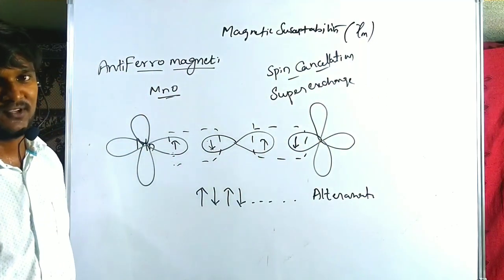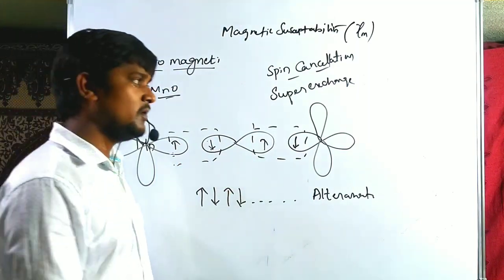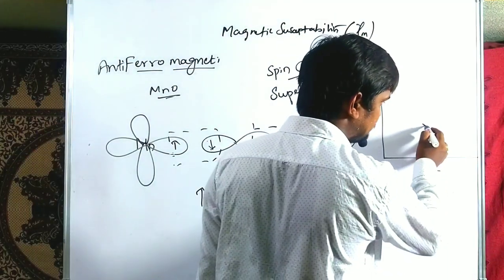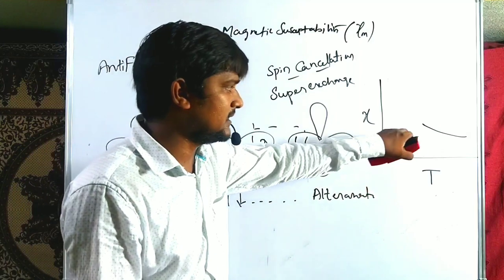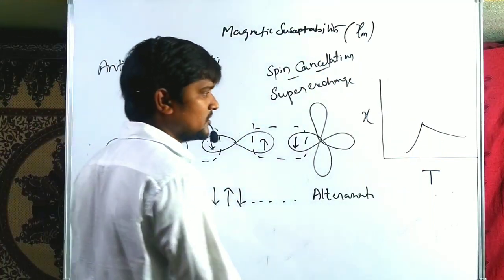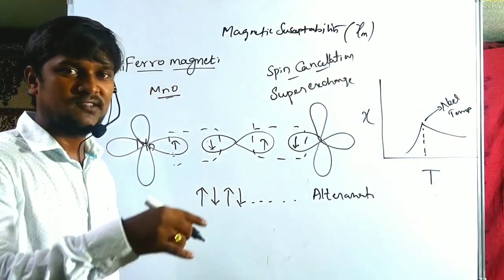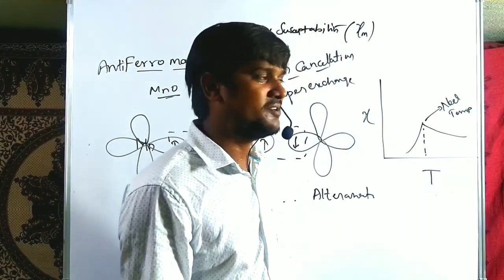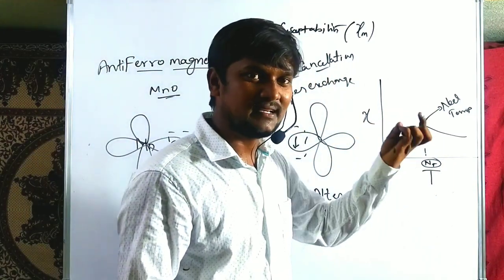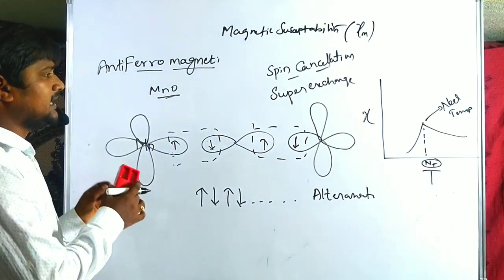The super exchange process will reach a certain temperature, and after reaching that temperature, susceptibility sharply decreases. That temperature is called the Neel temperature. In ferromagnets the critical temperature is called the Curie temperature; in antiferromagnets it is called the Neel temperature. When susceptibility reaches a sharp decrease on the graph, that is called antiferromagnetism.